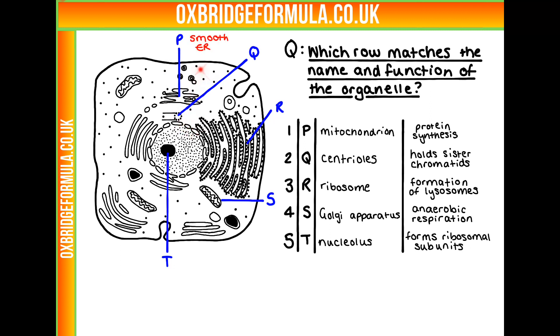P is going to be our smooth endoplasmic reticulum. It's not going to have any bumps, which would be the ribosomes, but it is that sort of spindly-like structure.